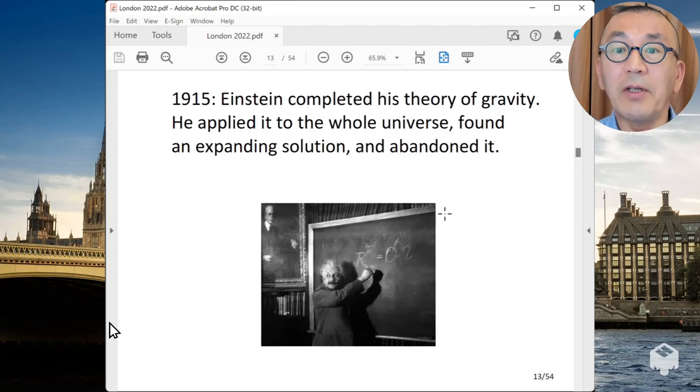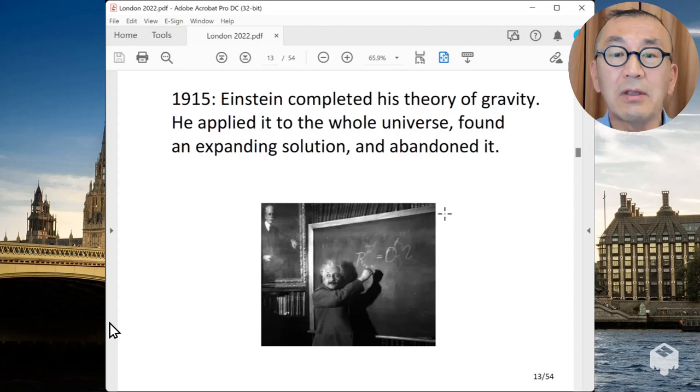The story started in 1915, when Einstein completed his theory of gravity. This made it possible to study the evolution of the universe in a scientific way. In fact, Einstein, as soon as he developed his theory of general relativity, applied it to the whole universe. And then, by solving his gravitational equation, he found that the universe must be expanding or contracting. But he somehow, for some reason, thought that this is not consistent with his intuition about the universe. And he abandoned the solution.